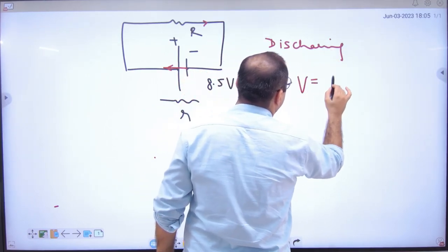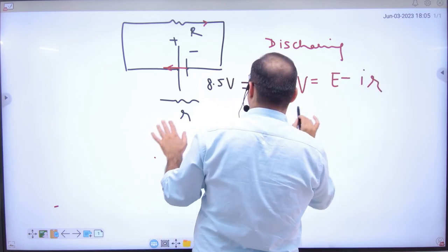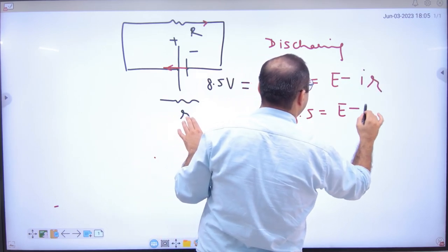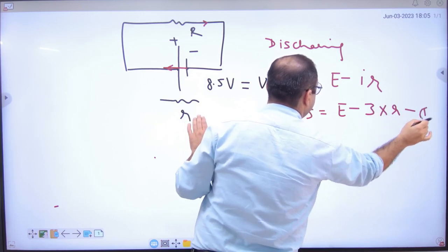So what will be V? E minus IR. So V value is 8.5, E I don't know, current I know. This is equation number 1.